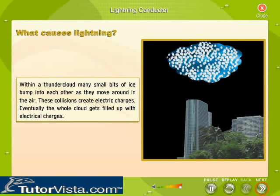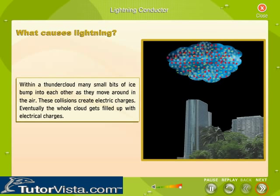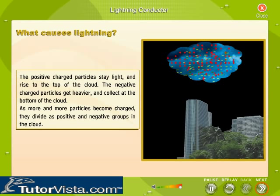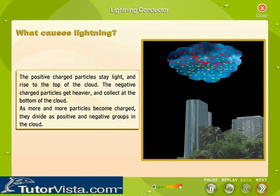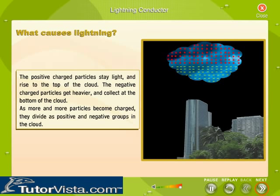Within a thunder cloud, many small bits of ice bump into each other as they move around in the air. These collisions create electric charges. Eventually, the whole cloud gets filled up with electrical charges. The positively charged particles stay light and rise to the top of the cloud. The negatively charged particles get heavier and collect at the bottom of the cloud. As more and more particles become charged, they divide as positive and negative groups in the cloud.